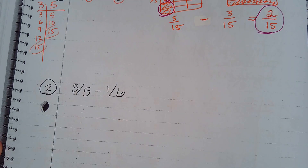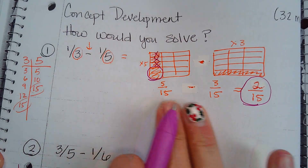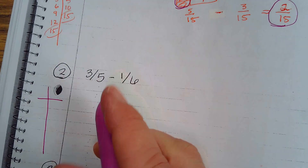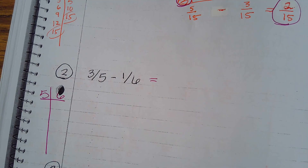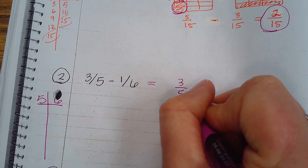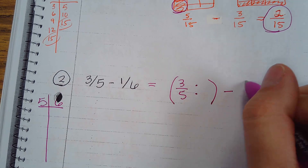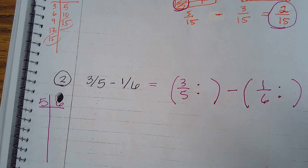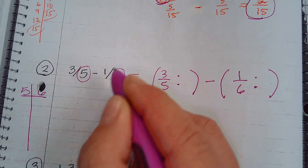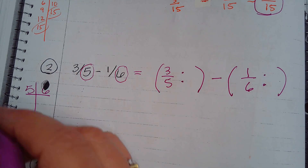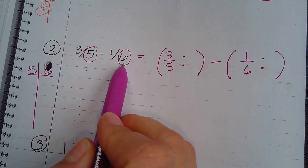Moving on. We don't have to use the rectangular model on three-fifths minus one-sixth. Instead, we can jump right in — this is just a review of the concepts we've been building on. We have five and six as denominators, so we're going to set this problem up. We need to find our common denominator because we cannot subtract these two fractions as they do not have like units. Hopefully you're getting the hang of common denominators.